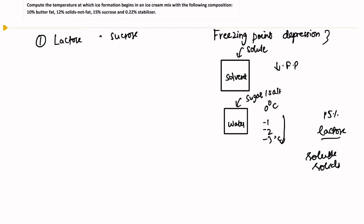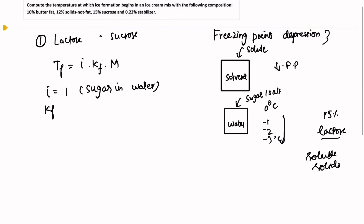Now, to calculate the freezing point depression, the relation is: ΔTf equals the van't Hoff factor (i) multiplied by the cryoscopic constant (Kf) multiplied by molality. The van't Hoff factor for sugar in water is equal to 1.